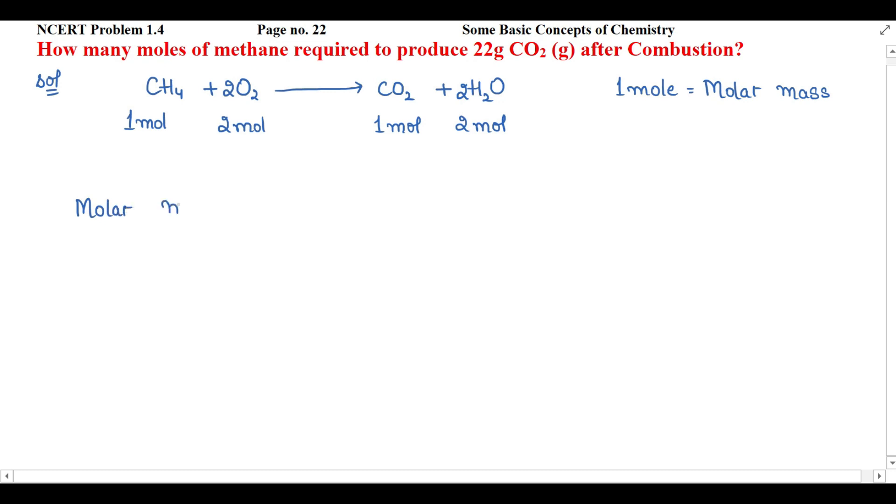I'll find the molar mass of carbon dioxide. Molar mass of CO₂ equals the atomic mass of carbon plus oxygen. Atomic mass of carbon is 12 grams plus atomic mass of oxygen is 16 grams. There are two atoms of oxygen, so times 2. So 12 plus 32 equals 44 grams.